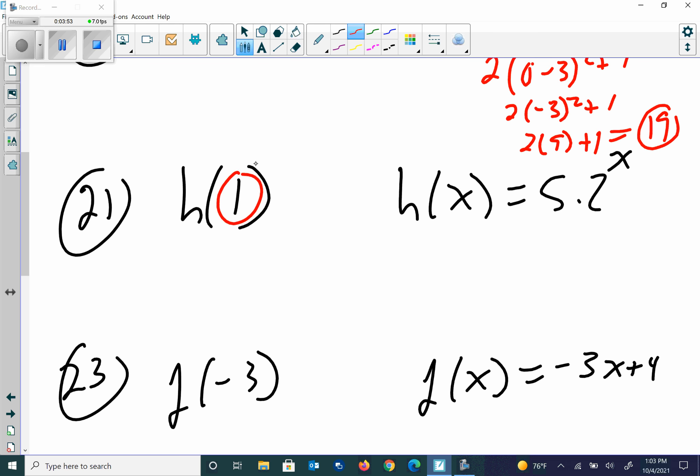For number 21, we're going to take 1, and we're going to plug it in for x. So I get 5 times 2 raised to the first power. 2 to the first is just 2. So the answer here is 10.